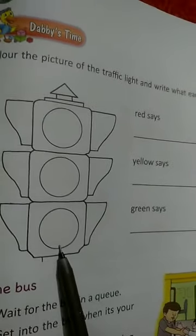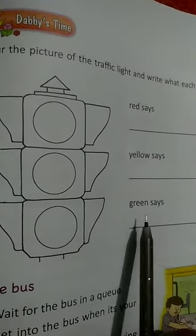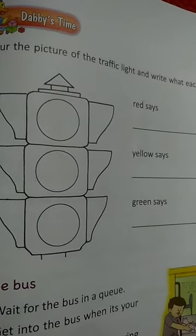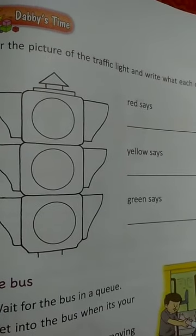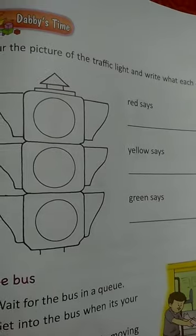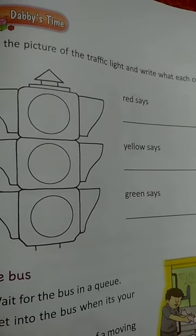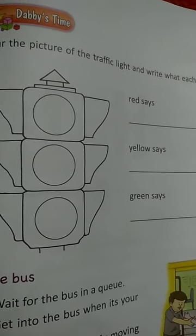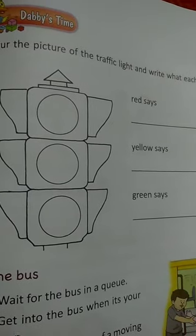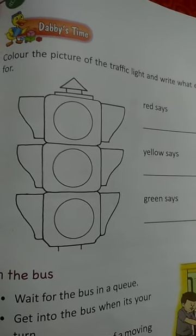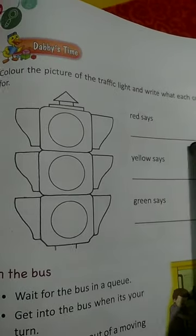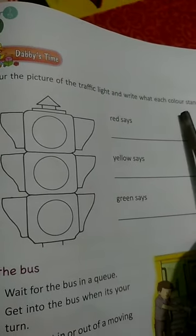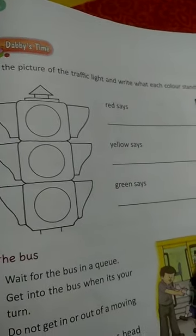Last one is green — green says go. There is a poem also: 'Red light, red light, what do you say? I say stop, stop right away.' You already learned this in your previous class. Now, color this picture of the traffic light and write what each color stands for.